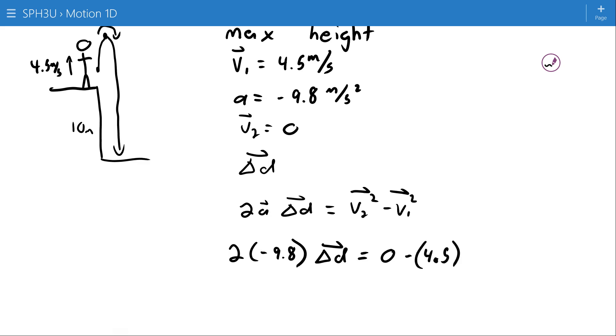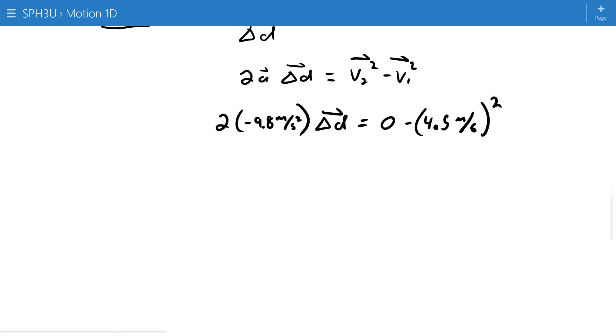2a delta d is equal to v2 squared minus v1 squared. Just substituting my values. I'm getting lazy with units one more time. 9.8 meters per second squared. 2 times negative 9.8 is negative 19.6 meters per second squared.